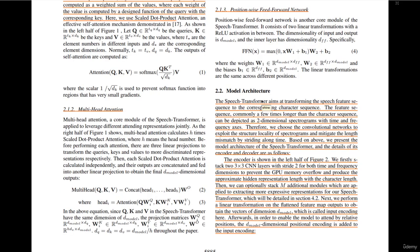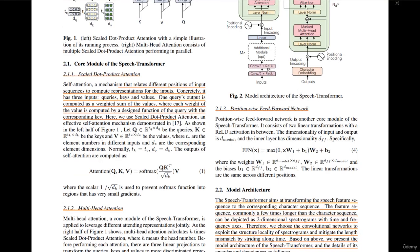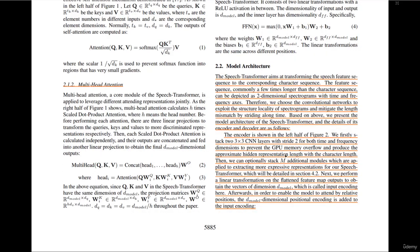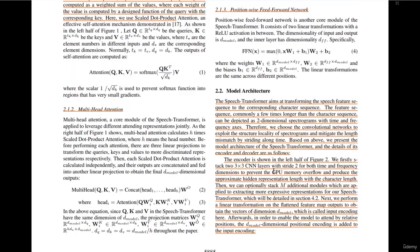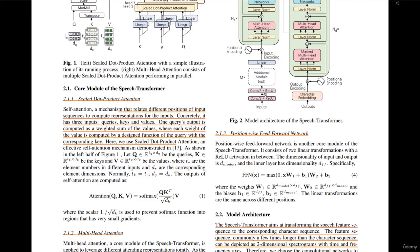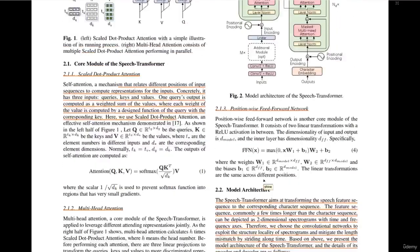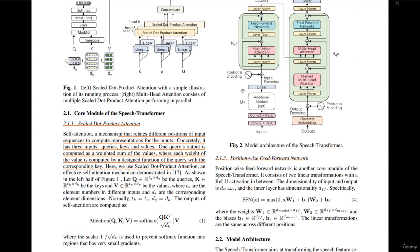Note that another option would be to use the LSH attention instead of the usual attention, which was presented in a separate paper. Then optionally, additional models could be added. After these additional models, a linear transformation is performed on the flattened feature map outputs to obtain a vector of dimension D_model. We ensure it gives us an output vector of dimension D_model — this is the input encoding to our encoder after this linear layer. Then we include the positional encoding as with the classical Transformer, so we can attend based on the relative positions of our inputs.